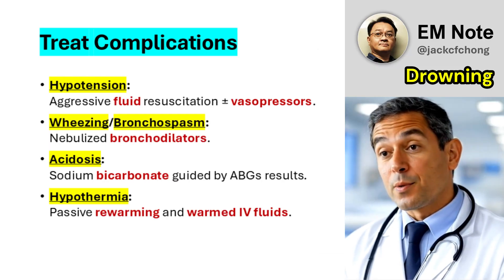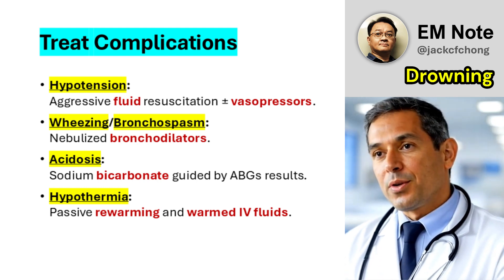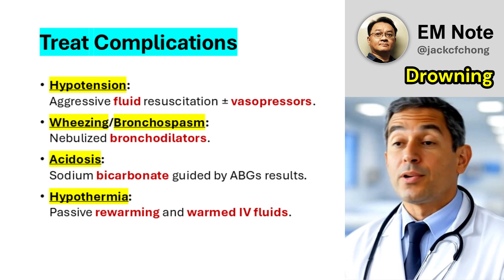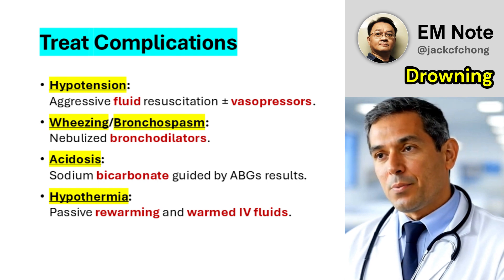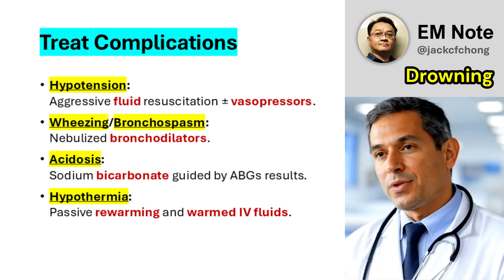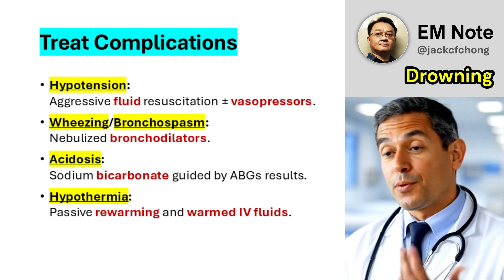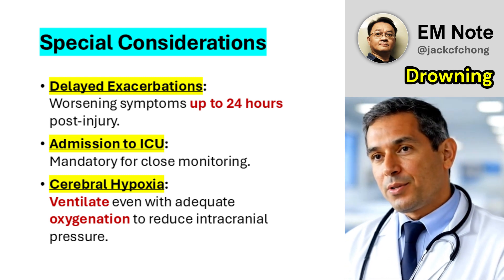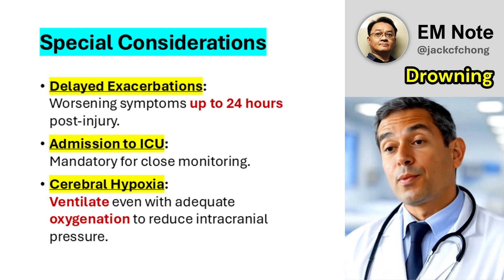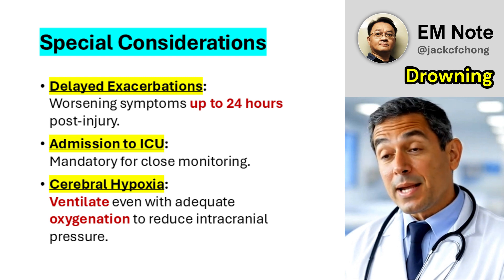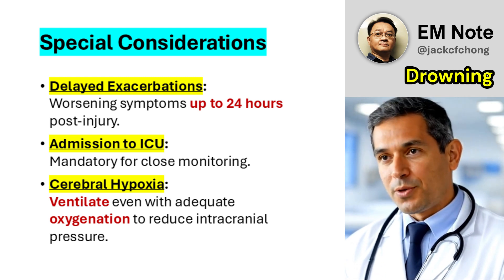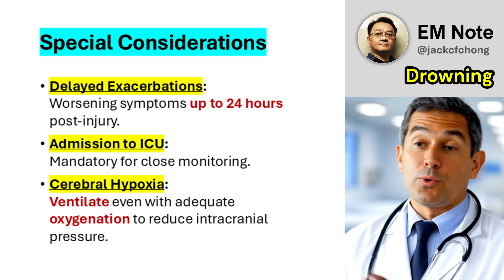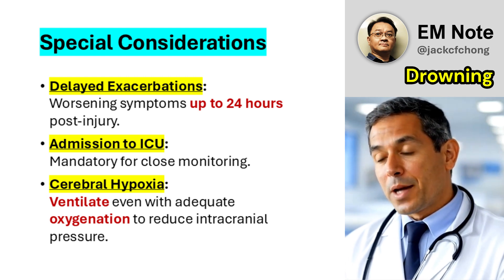Address complications: treat hypotension aggressively with fluids and vasopressors if needed, manage wheezing or bronchospasm with nebulized bronchodilators, and correct severe acidosis with sodium bicarbonate under guidance from blood gas results. Don't forget to address hypothermia, which is common in drowning victims — passive rewarming techniques and warmed intravenous fluids are key interventions. Even after stabilization, worsening symptoms can occur up to 24 hours post-injury, underscoring the importance of admitting all drowning patients to the ICU for close monitoring. Patients with signs of cerebral hypoxia, such as persistent unresponsiveness, should be ventilated even if their oxygenation appears adequate, as cerebral edema is likely contributing and controlled ventilation helps reduce intracranial pressure.